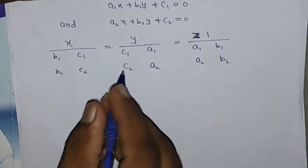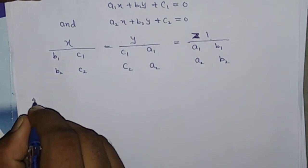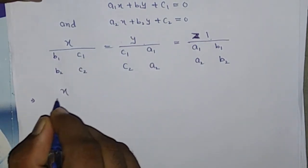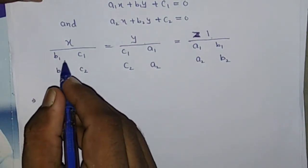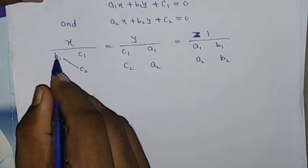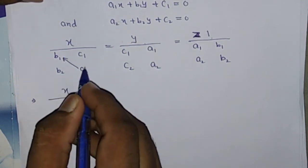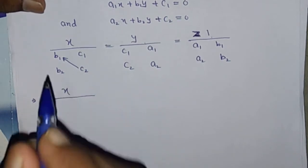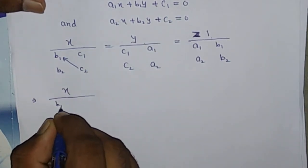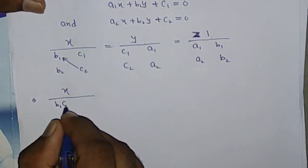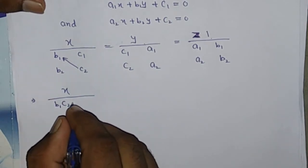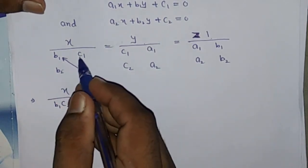Then in the next step we cross multiply this term, means we multiply B1 to C2, put minus sign and B2 C1.